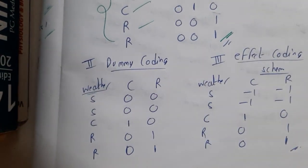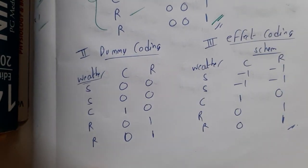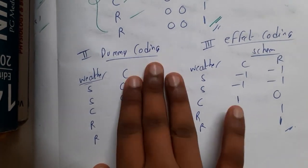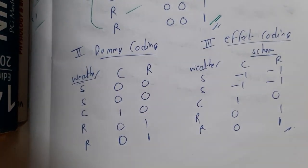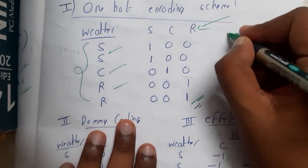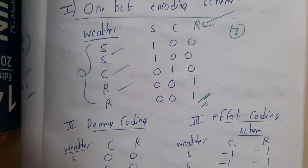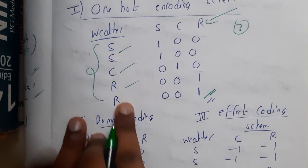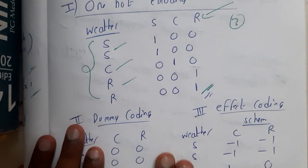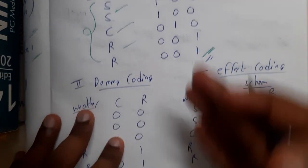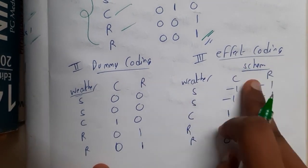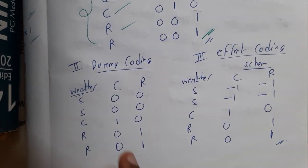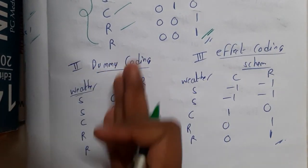The second type is dummy coding. Here, instead of having separate columns for each one—previously it was a single column but now it became three columns, which is a bit tough—a simple version of it is dummy coding or effect coding scheme. In dummy coding, you will remove one of its column. Instead of placing ones there, in the rest of the places you will place zero.